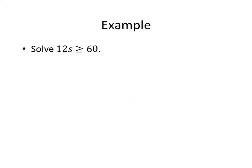So let's get S by itself. If we have 12S is greater than or equal to 60, we divide by 12. Do I need to switch my inequality? No, because I didn't divide by a negative. So S is greater than or equal to 5. That's your answer.